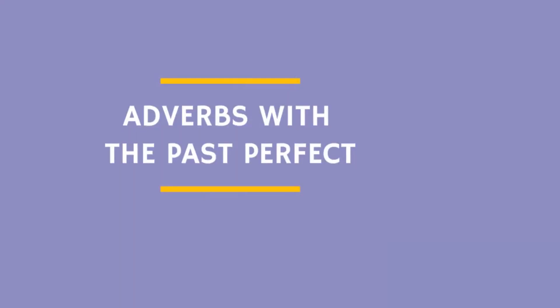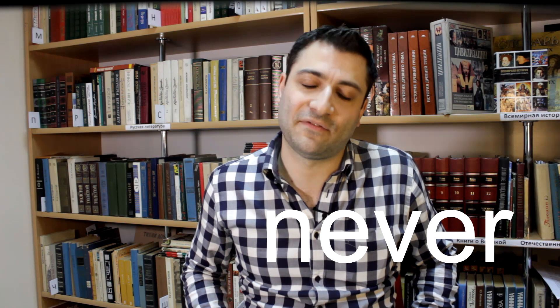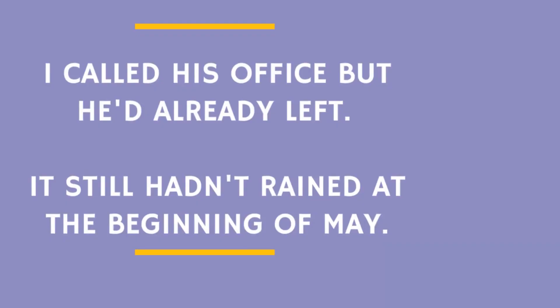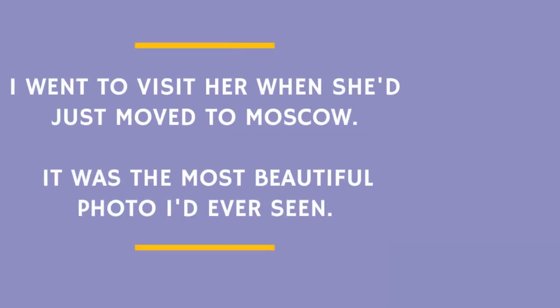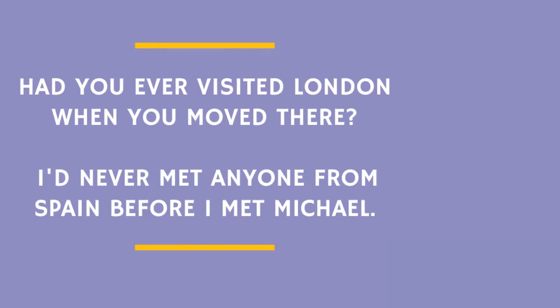We can also use adverbs with the past perfect: 'already' — before the specified time; 'still'; 'just' — a very short time before the specified time; 'ever' — at any time before the specified time; or 'never' — no time before the specified time. Examples: 'I called his office, but he'd already left.' 'It still hadn't rained at the beginning of May.' 'I went to visit her when she had just moved to Moscow.' 'It was the most beautiful photo I'd ever seen.' 'Had you ever visited London when you moved there?' 'I'd never met anyone from Spain before I met Michael.'